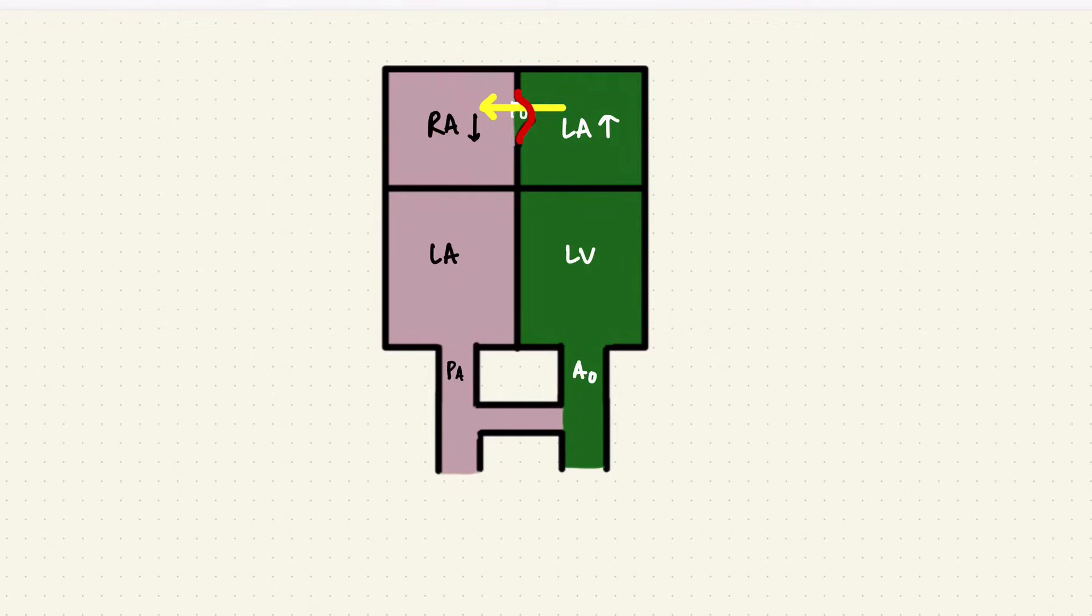In most people, it'll close permanently. If it doesn't, it's called a patent foramen ovale. But because in general, the left atrial pressure is going to stay higher than the right, the flap stays closed. And most of the times, it goes unnoticed.